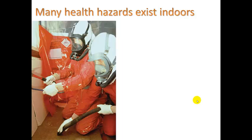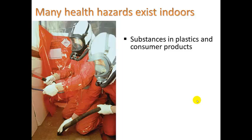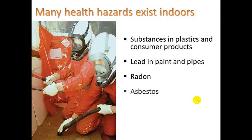Let's take a look at indoor health hazards. Substances in plastics and consumer products can give off toxic chemicals. Lead in paint and pipes, radon, asbestos, and fire retardants are found in carpets, insulation in walls, and paint. The pipes can have lead, and as water flows through it can pick up that lead — if you drink it, you could be bringing lead into your system.